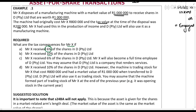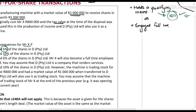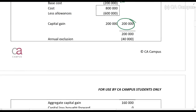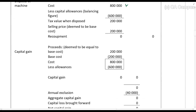In part B, if Mr. X received ten percent of the shares in DP to I Limited, the qualifying interest requirement is met so Section 42 will apply. When Section 42 applies, Mr. X should not have any taxable income. The selling price is treated as if it equals the base cost — the tax value of 200,000 — so the proceeds equal 200,000. There is no recoupment and no capital gain.